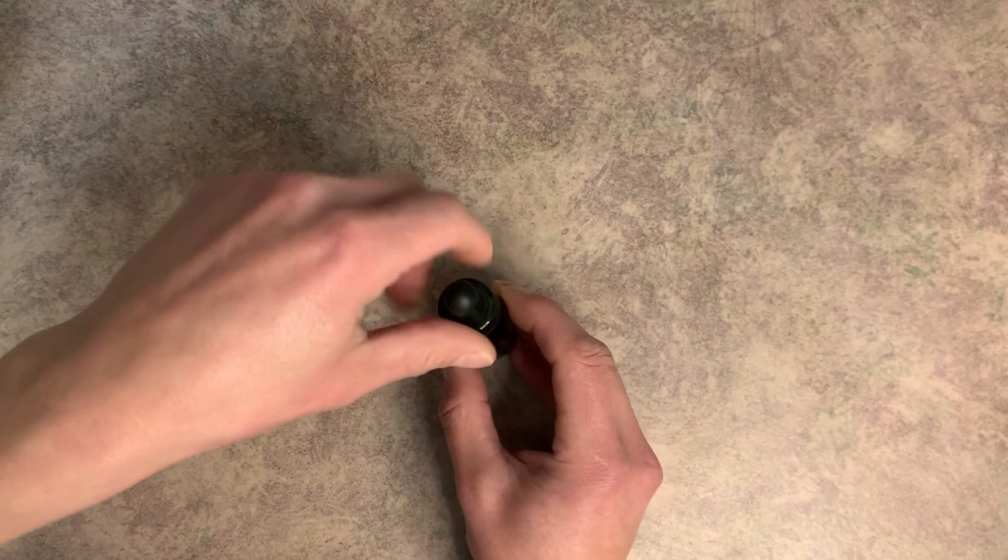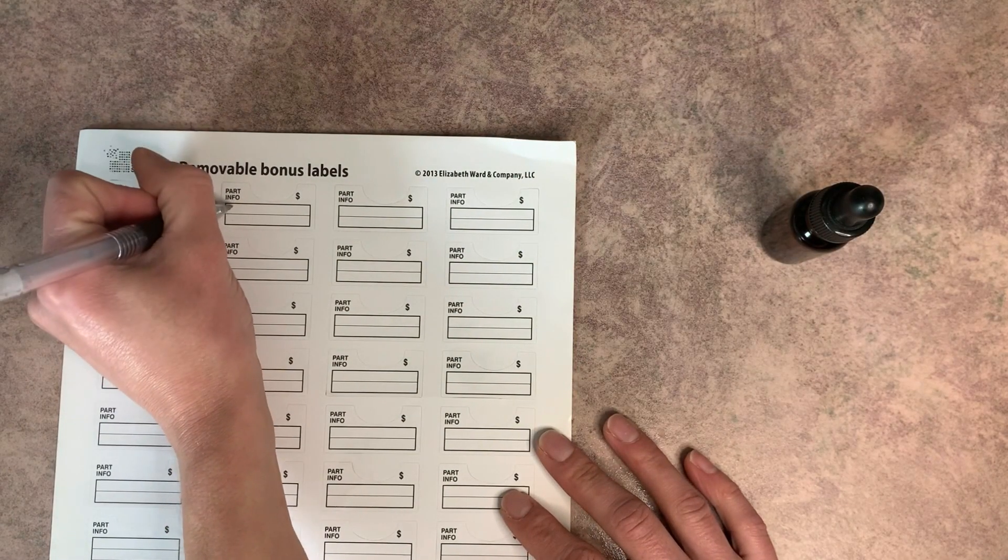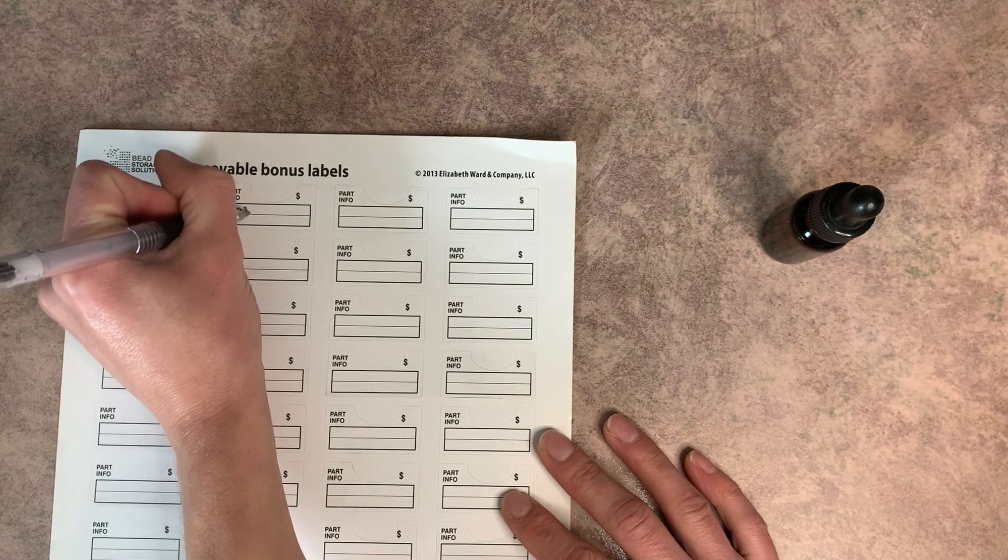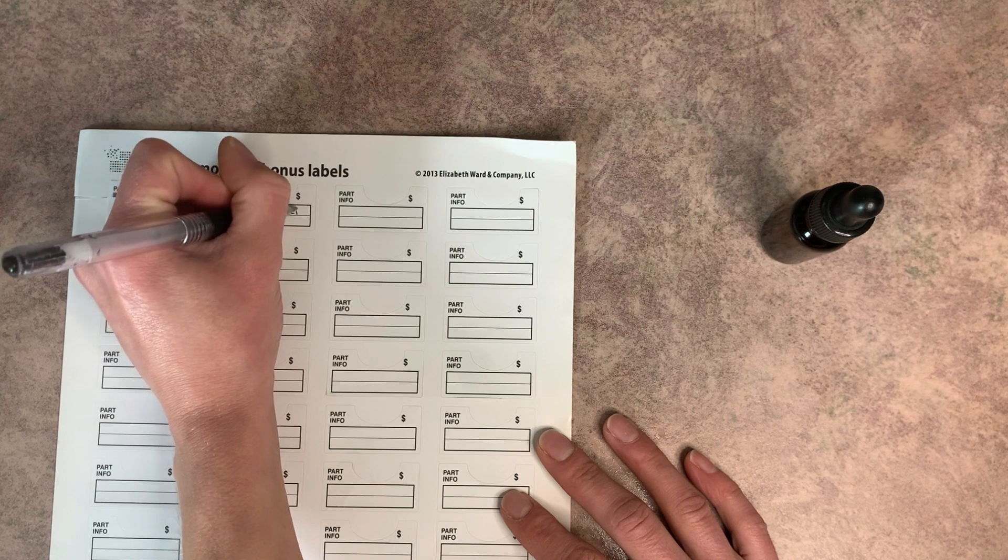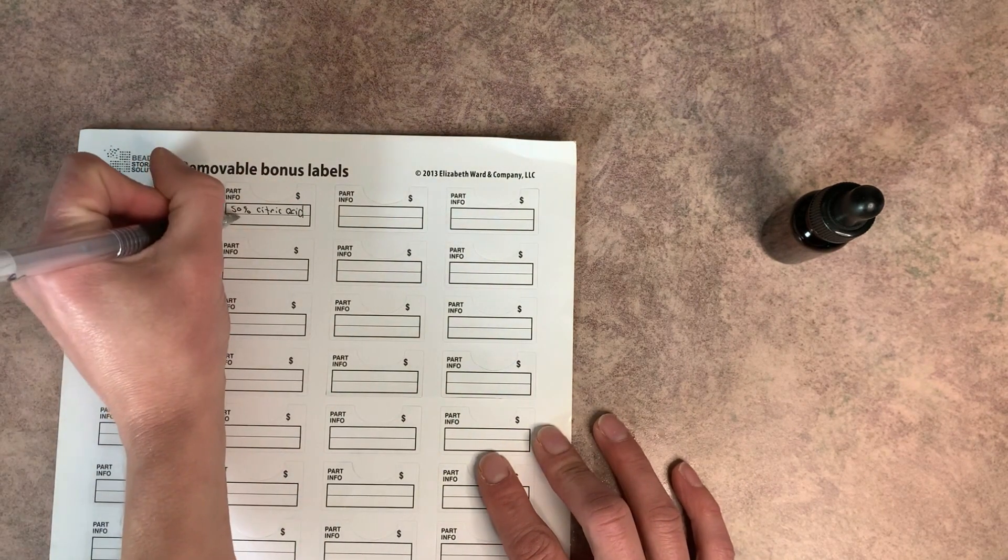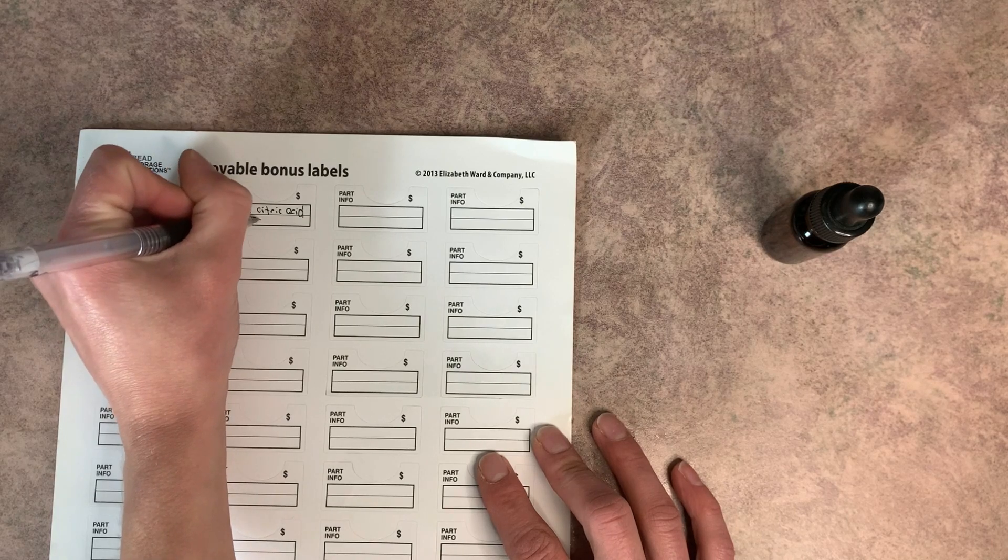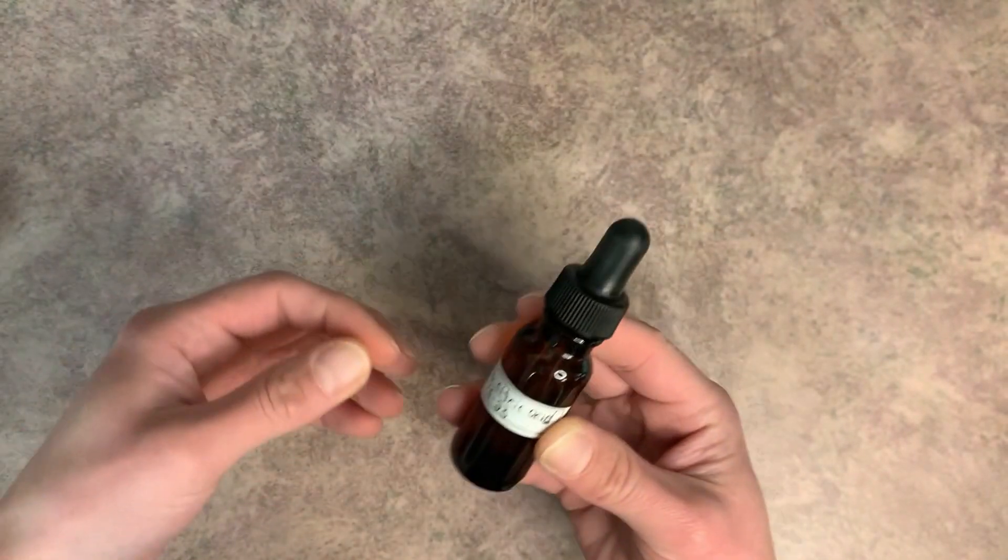Put the cap on it, and then I'm going to go ahead and label these. So I'm going to put 50% citric acid and I'm going to put the date on here because this is going to be good for one year from today. And I'm just going to go ahead and pop this on my container.